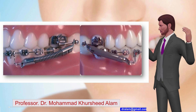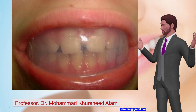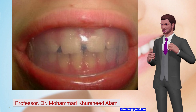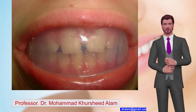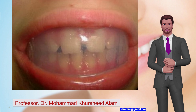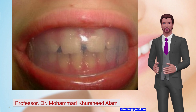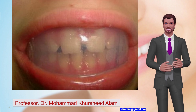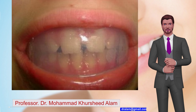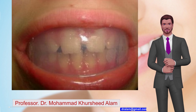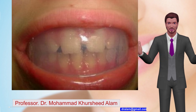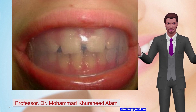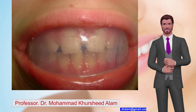Number 8: Oral Screen. Introduced by Newell in 1912. Removable appliance placed in the anterior vestibular region. Used in correction of habits of thumb sucking, lip biting, and tongue thrust. Also used for correction of mouth breathing, mild disto-occlusion, and flaccid orofacial musculature.